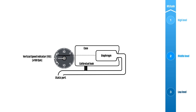The diaphragm is housed inside a case which is connected to the static port via the calibrated leak. This tapered connection is designed to slow down the pressure change inside the case, whereas the pressure change inside the diaphragm is almost instant.